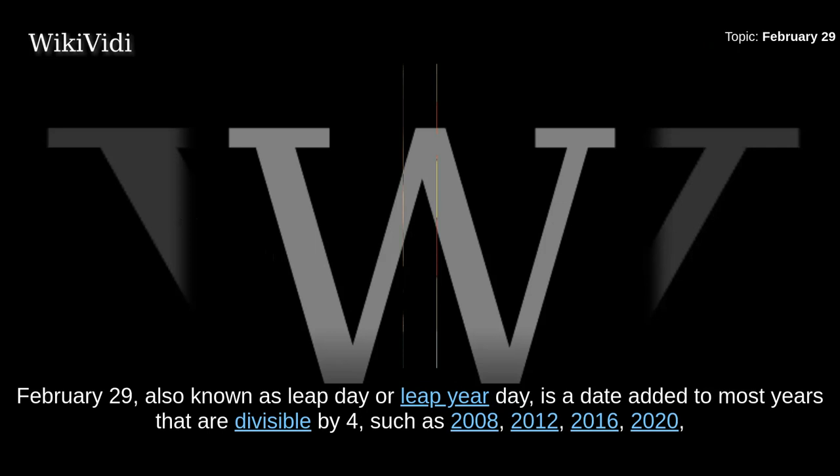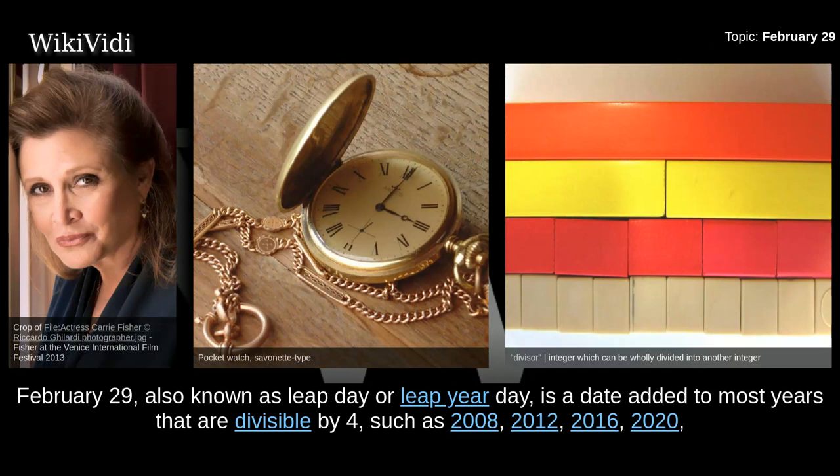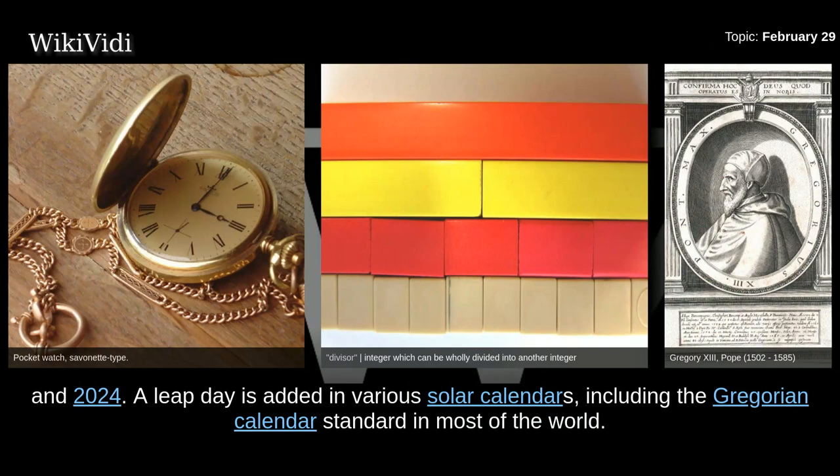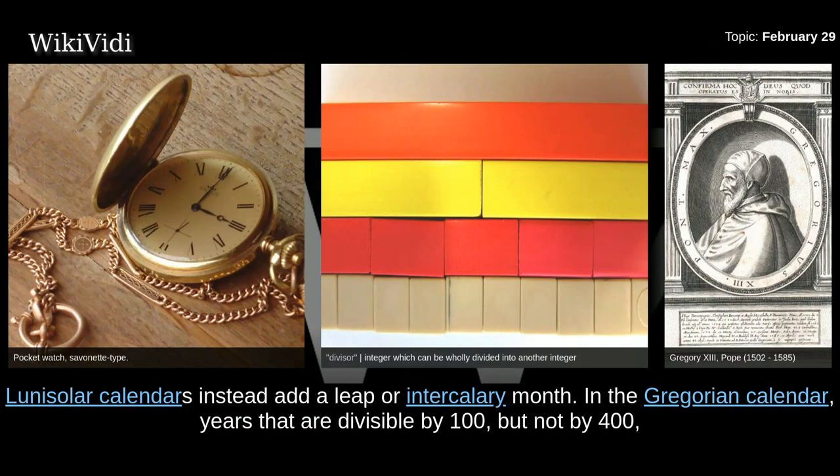February 29th, also known as Leap Day or Leap Year Day, is a date added to most years that are divisible by four, such as 2008, 2012, 2016, 2020, and 2024. A Leap Day is added in various solar calendars, including the Gregorian calendar standard in most of the world.